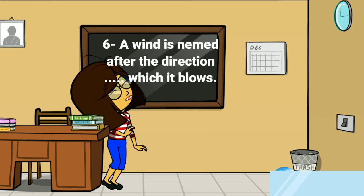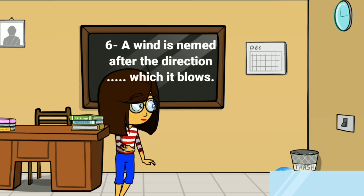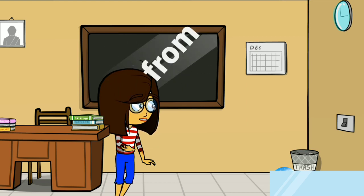Sixth question: a wind is named after the direction dash which it blows. A wind is always named after the direction from which it blows. So the answer of this question is 'from.'